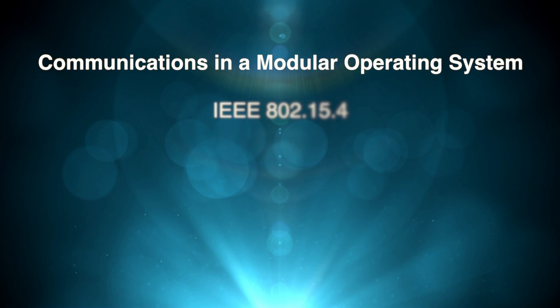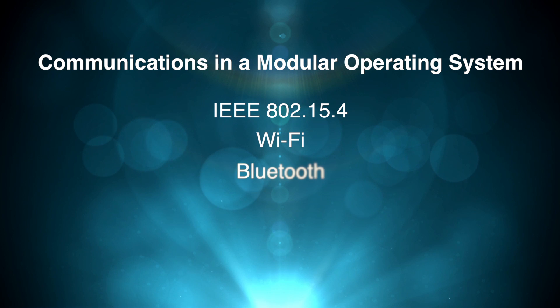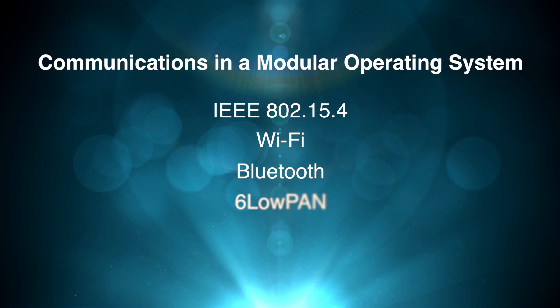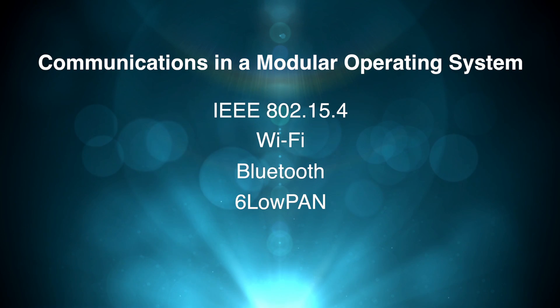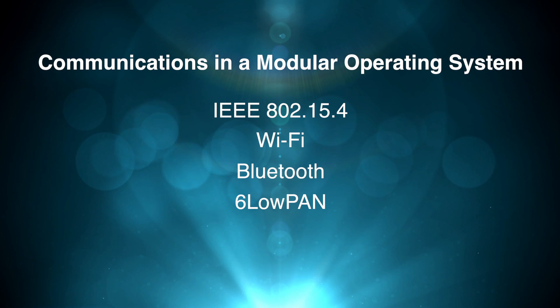Back in our second video, we talked about the network connections for your IoT device and the range of communication standards that your chosen RTOS has to support. These include IEEE 802.15.4, Wi-Fi, and Bluetooth. And your device must be able to connect to IP networks using efficient protocols such as 6LoWPAN. A modular operating system will allow you to select the specific protocol stacks you need, saving memory on your device and reducing costs.